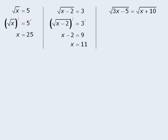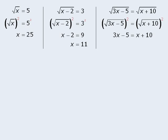How about this one? To solve this one, we will once again raise both sides to the power of 2. On the left-hand side, we get 3x minus 5, and on the right-hand side, we get x plus 10. From here, we'll subtract x from both sides, and then add 5 to both sides, and then divide both sides by 2 to get x equals 15 over 2.